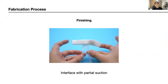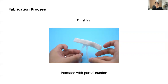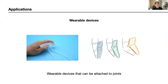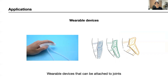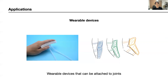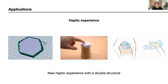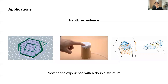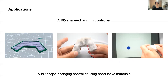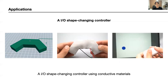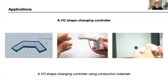As you can see, I'm able to control the hardness of each separately through independent suction. We introduced some applications of the proposed method. The first one is a wearable device that can be worn on the joints of the user's body and can be used flexibly depending on the situation by adjusting the jamming of the respective rooms. Secondly, we believe that we can create a double structure inside the device which will provide users with a new haptic experience. Furthermore, using conductive filament for the internal beads, a versatile input-output shape-changing interface can be produced.